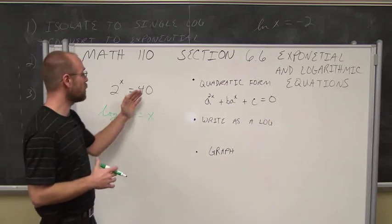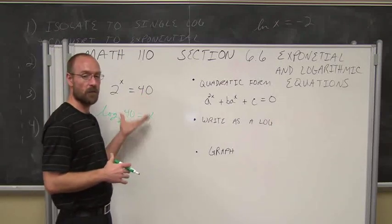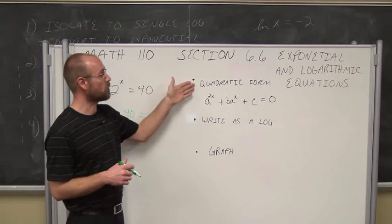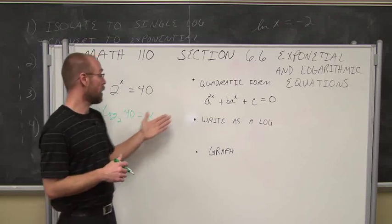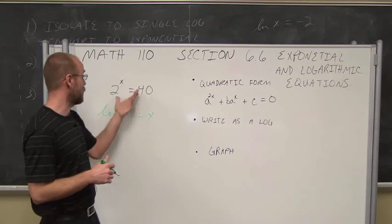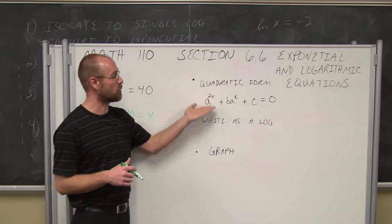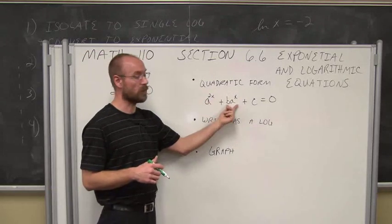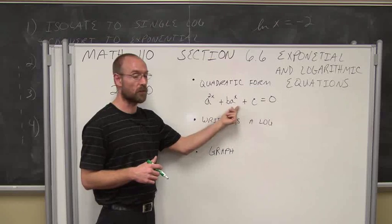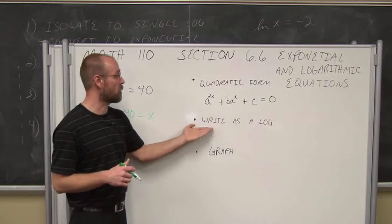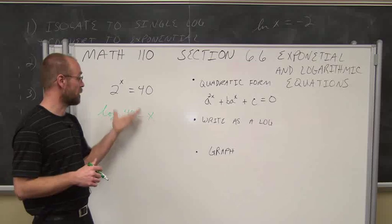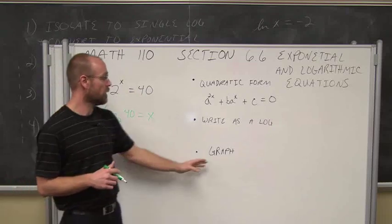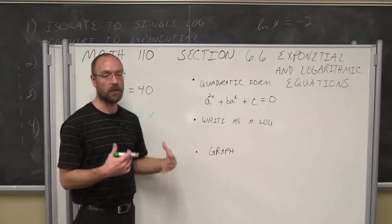Once we have a logarithmic or exponential equation, what we want to do is assess it first. Is it something that's quadratic in form? If we wrote this in exponential form, is it in quadratic form? Essentially, is this term squared relative to this term's variable? If not, then we want to write it as a log, and that's what we did in this example here. This was not quadratic in form, so we wrote it as a log.